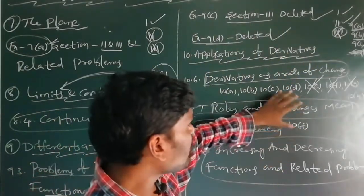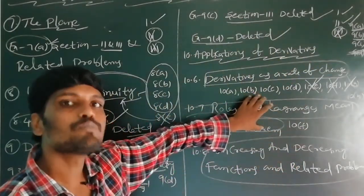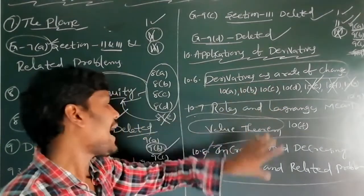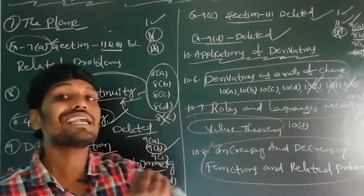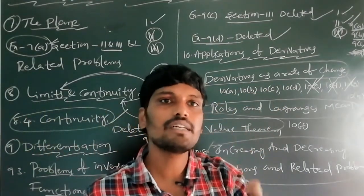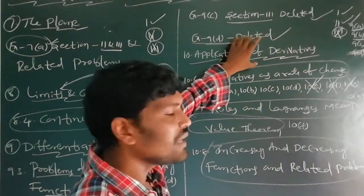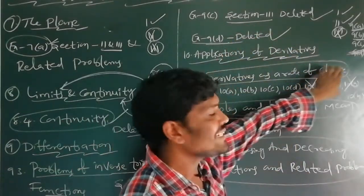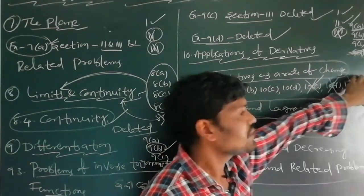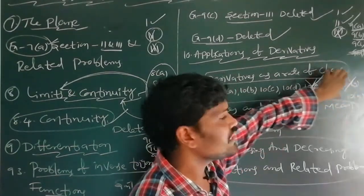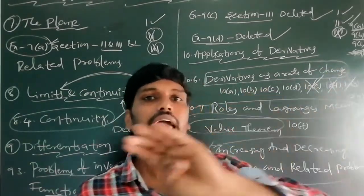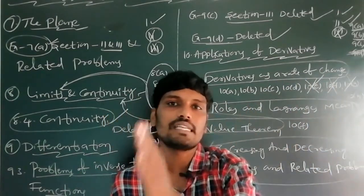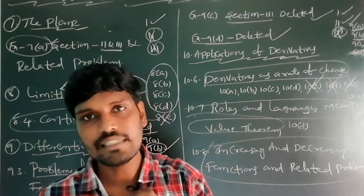The deleted topics in Applications of Derivatives are: rate of change (Exercise 10e), Rolle's theorem and Lagrange's mean value theorem (Exercise 10f), and increasing and decreasing functions (Exercise 10g). So in Applications of Derivatives, three exercises — 10e, 10f, and 10g — are deleted. All remaining exercises are coming to the IP examination.